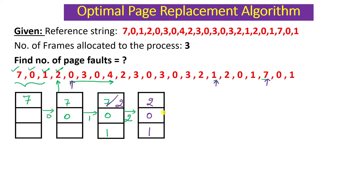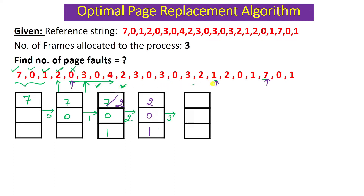Next is page 0. Zero is already in the frames, so it does not generate a page fault — it is a page hit. Now page 3 comes. Three is not here, so it generates a page fault. Which page should be replaced out of 2, 0, and 1? Looking into the future: zero is here close by, two is here, and one is used after a very long period of time. So one should be replaced. New frame contents: 2, 0, 3.